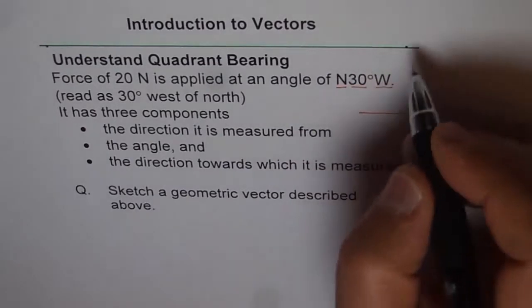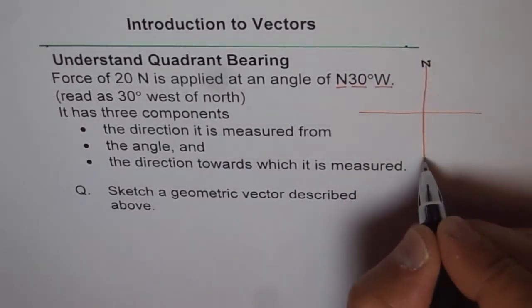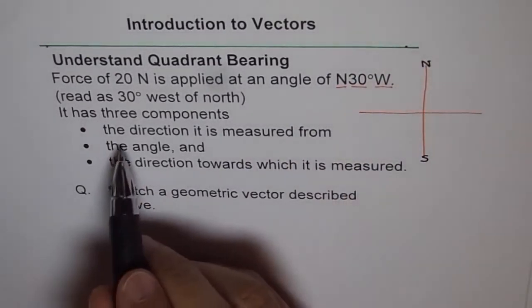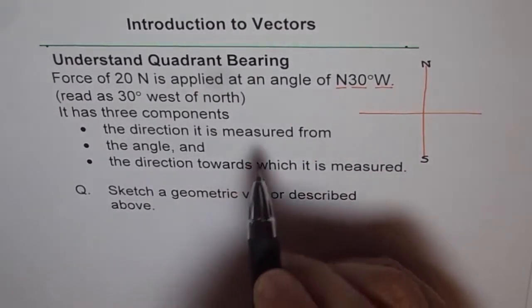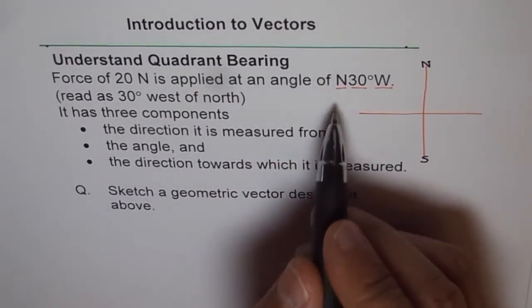So this is north for us and this is south. So direction it is measured from. In this particular example, we are measuring the direction from north.